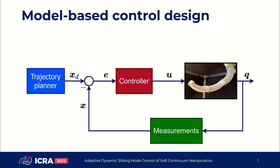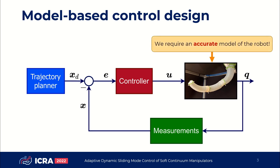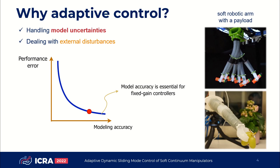So let's say we have our soft continuum arm and we want to control it with a model-based control strategy. If we assume we have a precise model of the robot, we can design typical fixed gain controllers so that the arm can track desired trajectories. However, it's usually difficult to develop a model that describes the motion precisely in all operating conditions, and we end up with an inaccurate model that leads to poor closed-loop tracking performance.